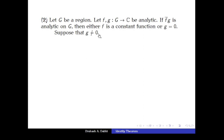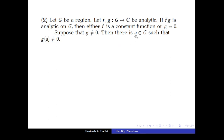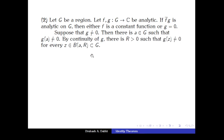We assume that one of the two conclusions is not true and prove the other. So we assume g is not identically zero and aim to show f is constant. Since g is not identically zero, it is non-zero at some point of G, so there exists a in G with g(a) ≠ 0. By continuity of g, we get some r > 0 such that g(z) ≠ 0 for all z in B(a, r), with B(a, r) contained in G.